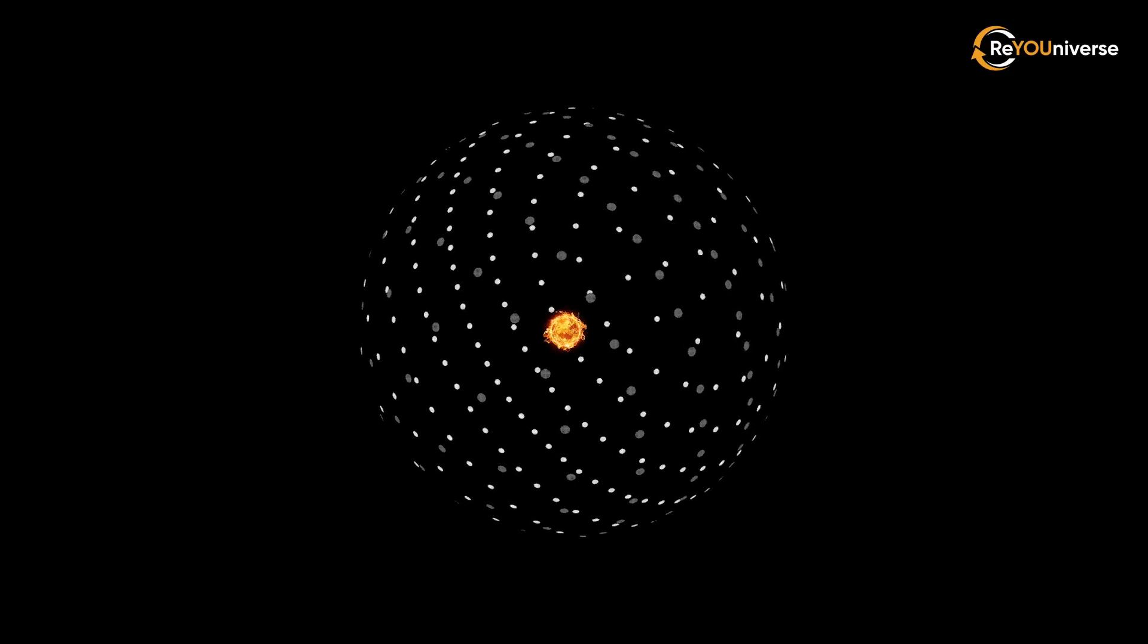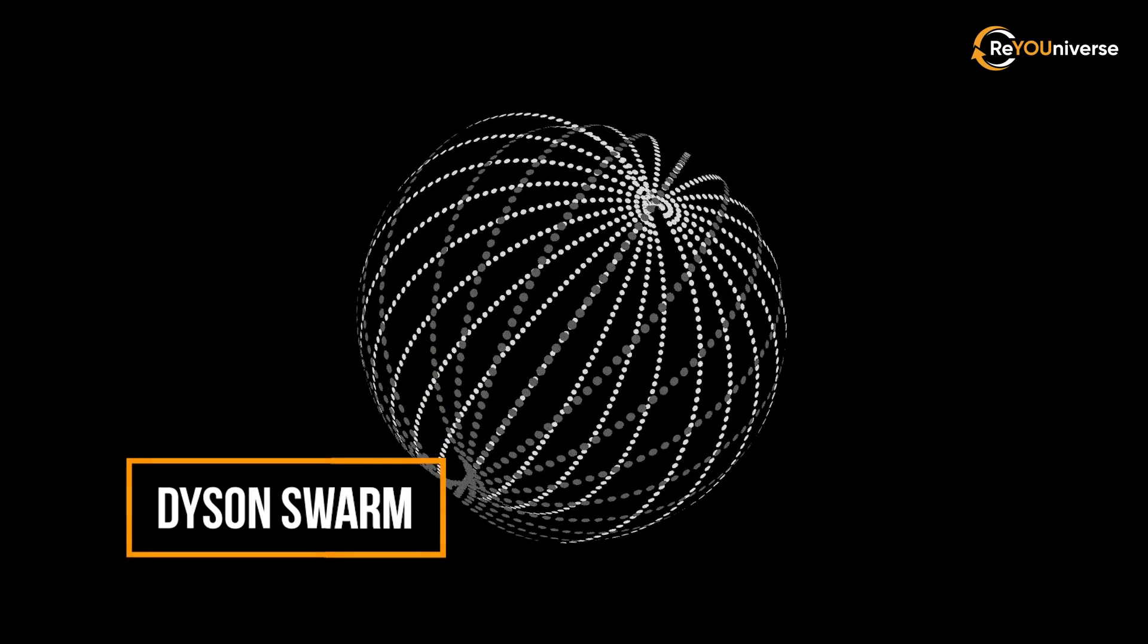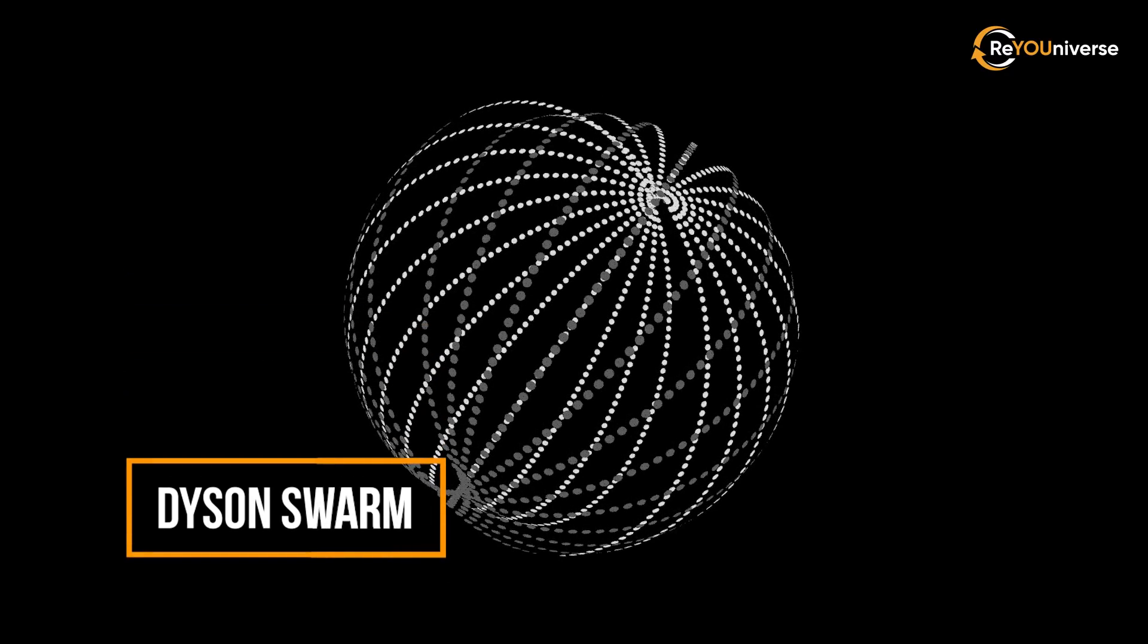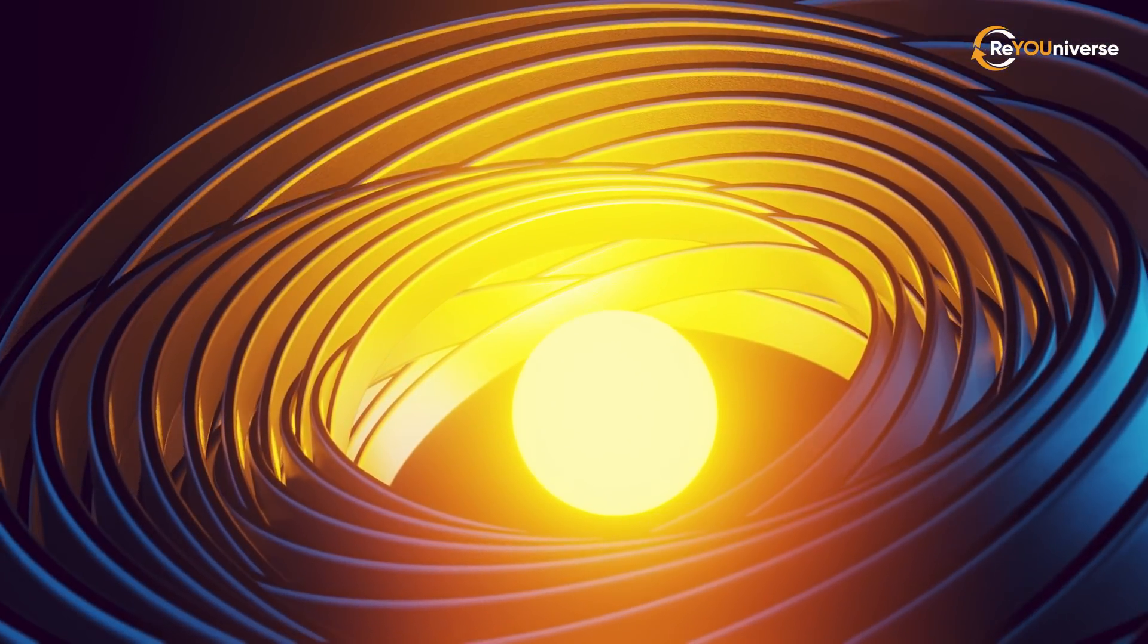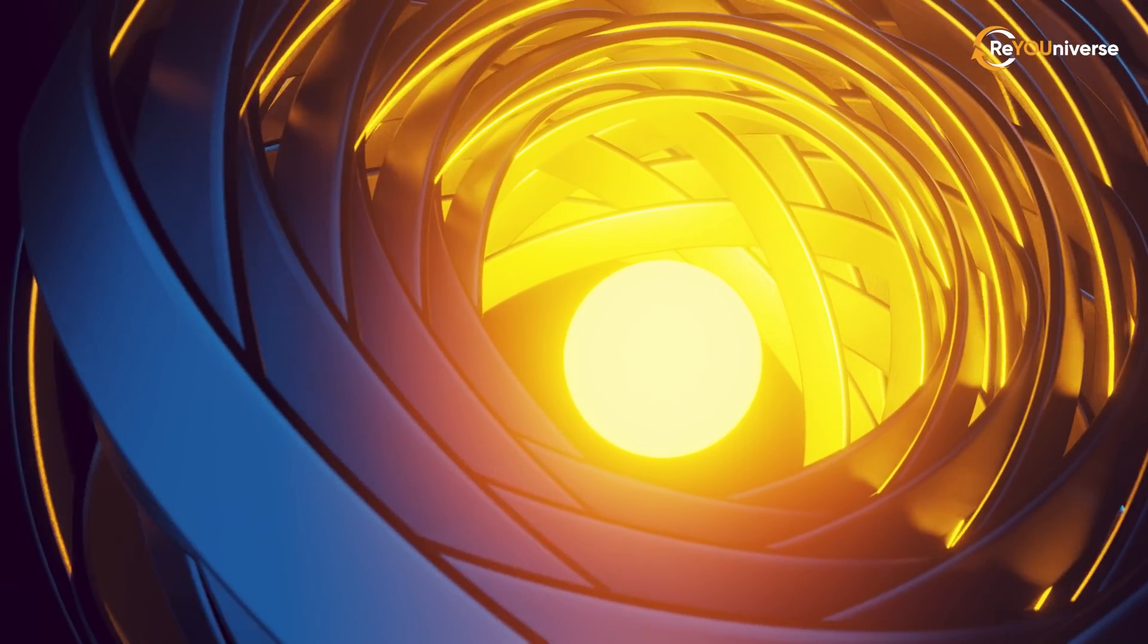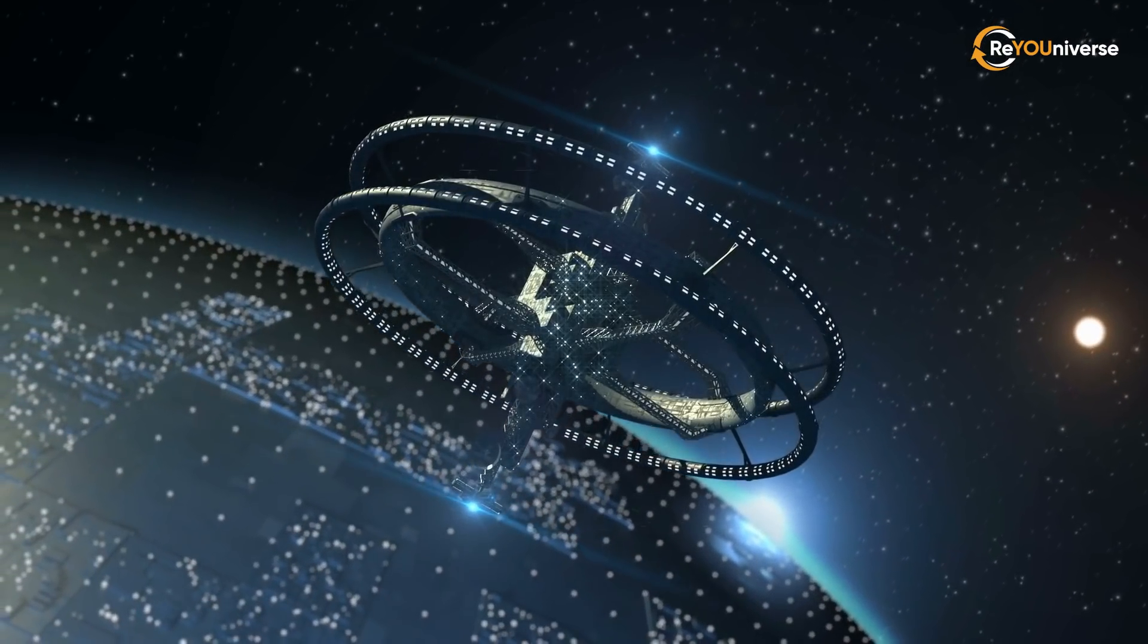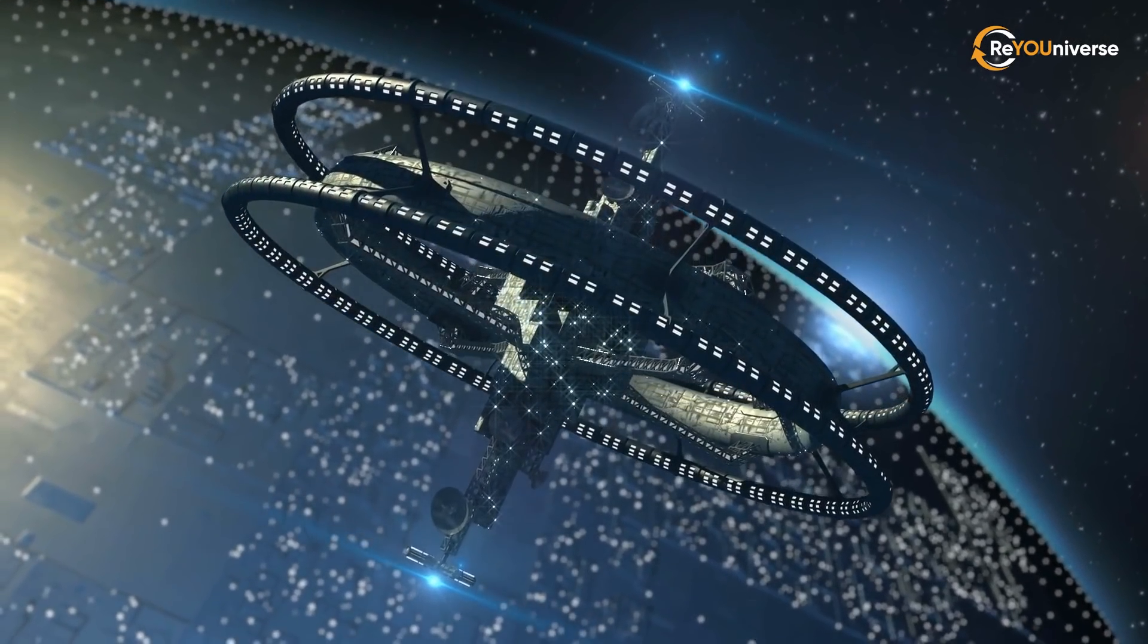Instead of a Dyson Sphere, we could build a Dyson Swarm. In other words, many small structures orbiting the Sun and collecting as much energy as possible. Then we could either live right there or somehow transmit the energy to Earth. One can also build a ring instead of a full sphere. Or we could look for other methods to obtain the amount of energy required for the second type.